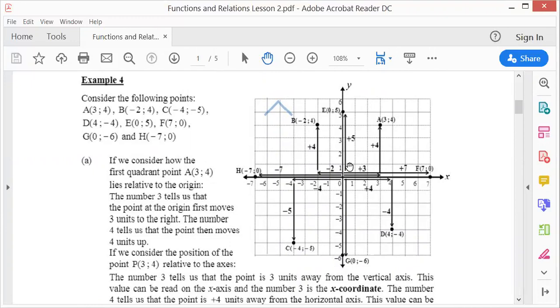Look at B: x negative, y positive. So that should be second quadrant. So x negative two and y positive four. Look at C: both are negative.